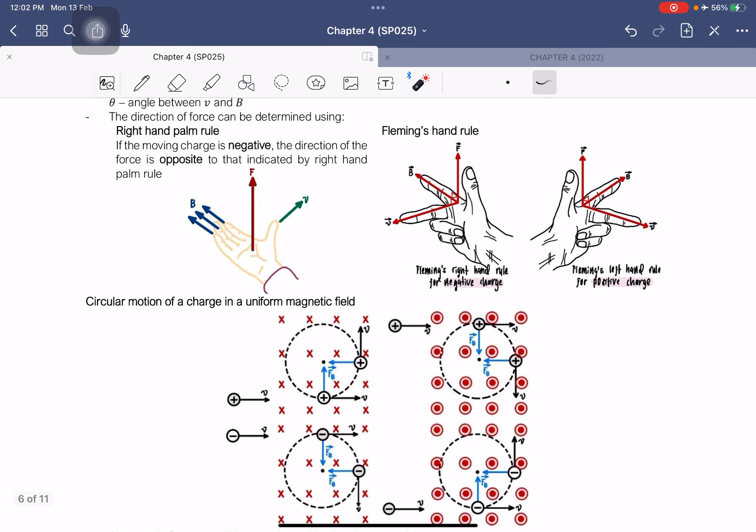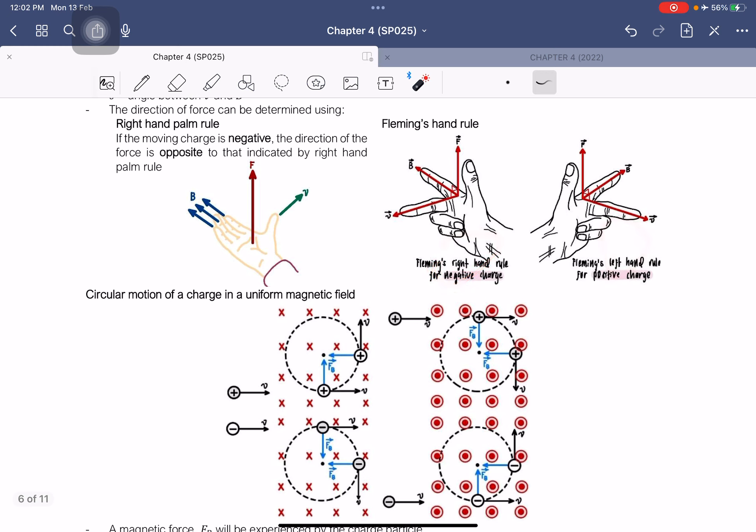For Fleming's hand rule, we have right hand and left hand rule. For the right hand rule, you use it for negative charge, whereas for the left hand rule, you will be using it for the positive charge.